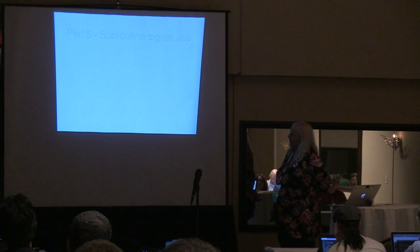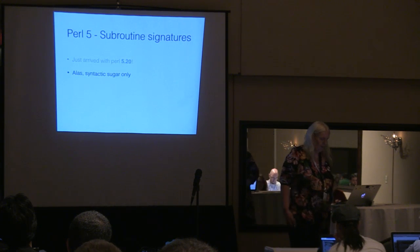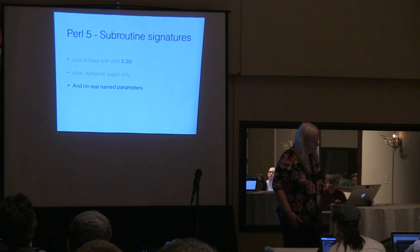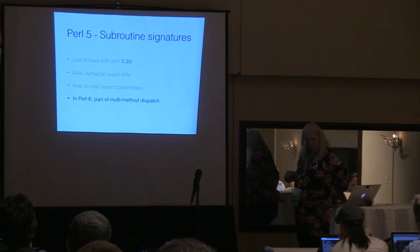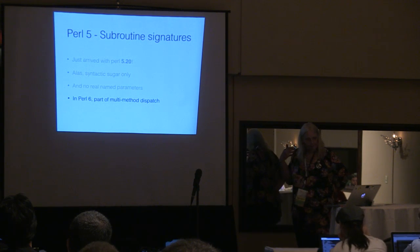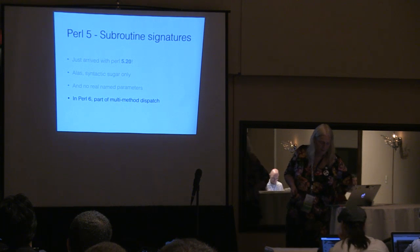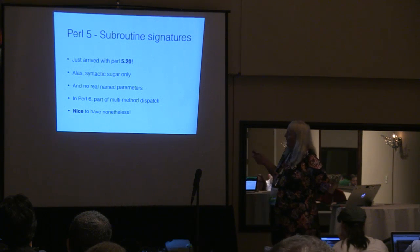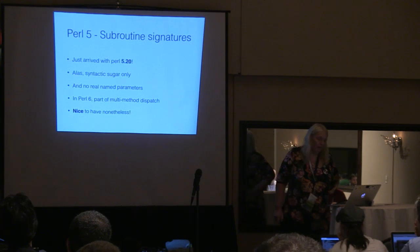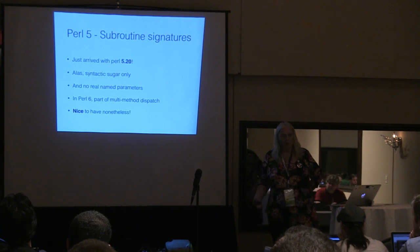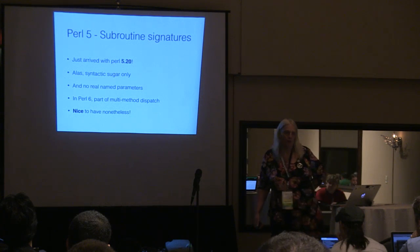We have subroutine signatures — just arrived with 5.20, syntactic sugar, no real named parameters. And in Perl 6, subroutine signatures are really part of multi-method dispatch. But it's nice to have subroutine signatures in Perl 5 nonetheless. Perl was one of the last languages to have something like that for subroutines.